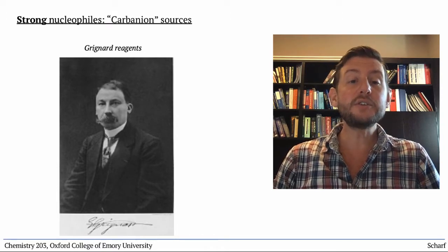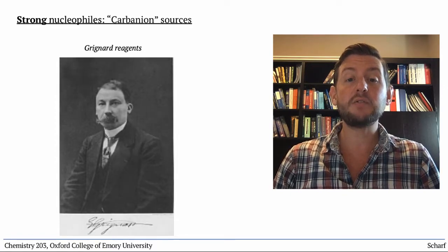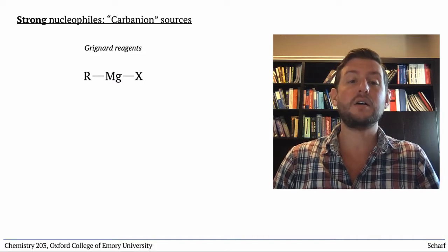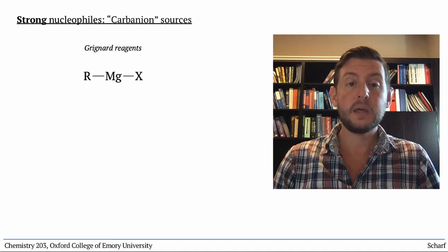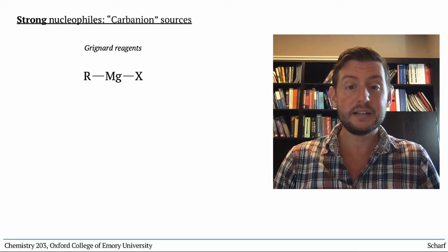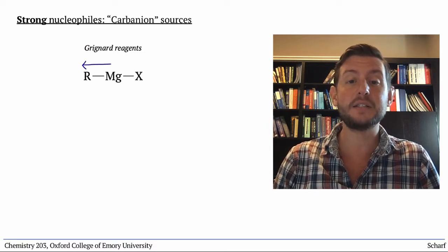He first described these reagents in 1901, and they have the general formula RMgX, where R is a hydrocarbon and X is a halogen. They have a carbon-magnesium sigma bond. Since carbon is much more electronegative than magnesium, this bond is very polar, with the carbon bearing most of the negative charge.